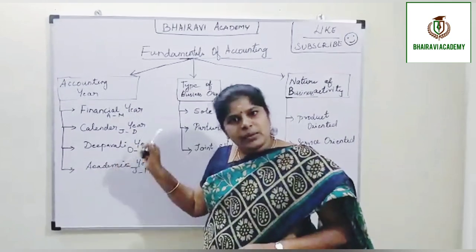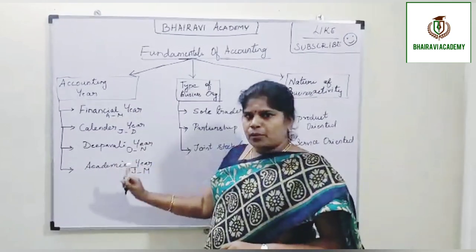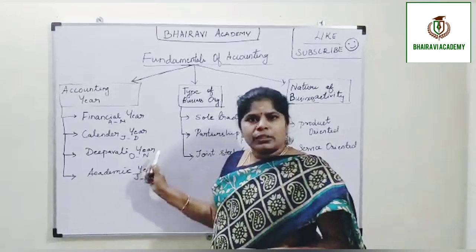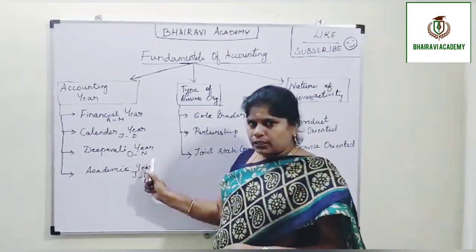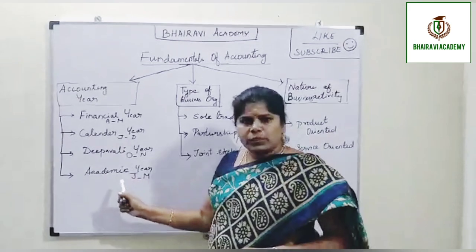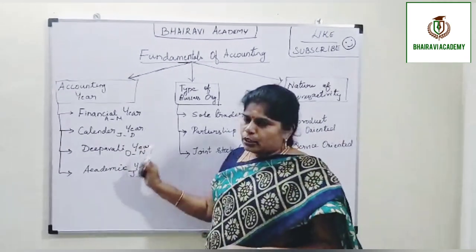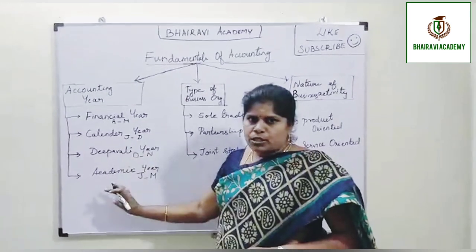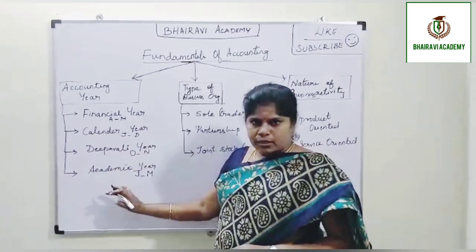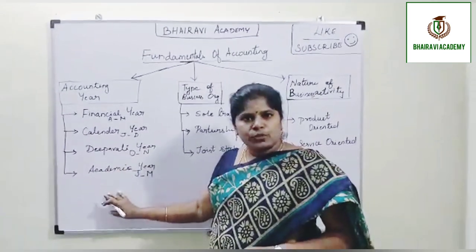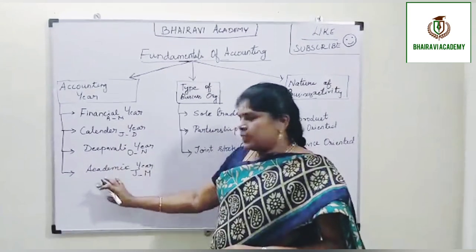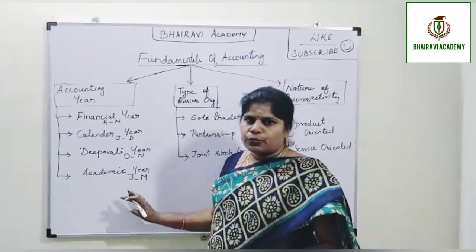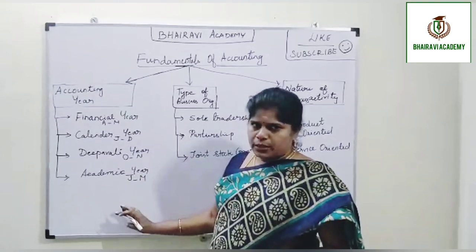The third type of accounting year is the academic year, adopted by educational institutions and academic-oriented organisations, which starts from 1st June and ends on 31st May of the subsequent year.